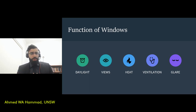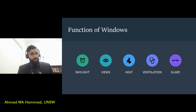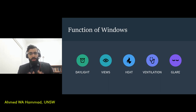In terms of the functions of windows in buildings, there are several important functions. Number one is daylight — the amount of lighting that gets into the building through the window, which is important if you're trying to rely less on artificial lighting. Number two is views, mainly for the occupants. Number three is the heat that is gained or in some instances lost through the window. Number four is ventilation. And finally, number five is glare — an issue we try to minimize to ensure occupant comfort.